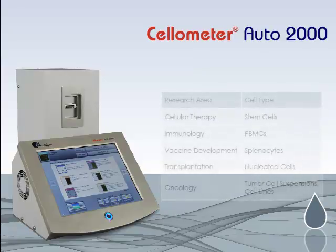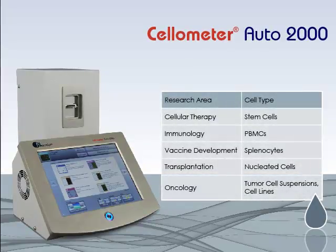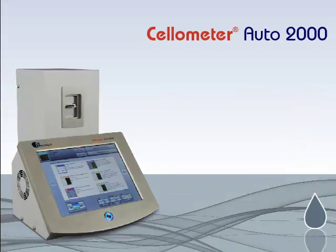The Cellometer Auto2000 is the instrument of choice for researchers in a wide range of fields performing primary cell analysis, including cellular therapy, immunology, vaccine development, transplantation, and oncology. Contact Nexcelom today to request an Auto2000 brochure or schedule a free in-lab demonstration.